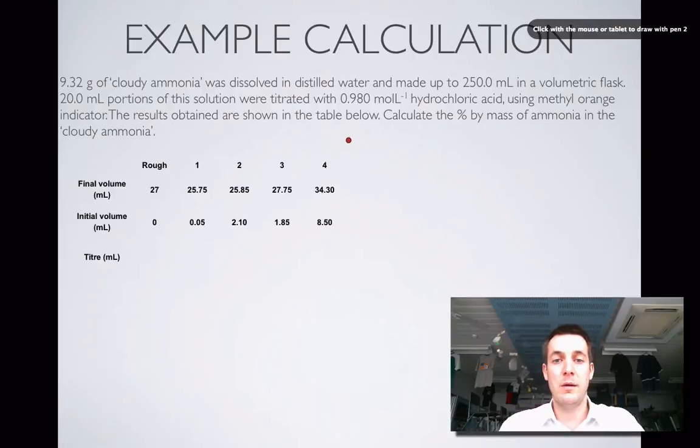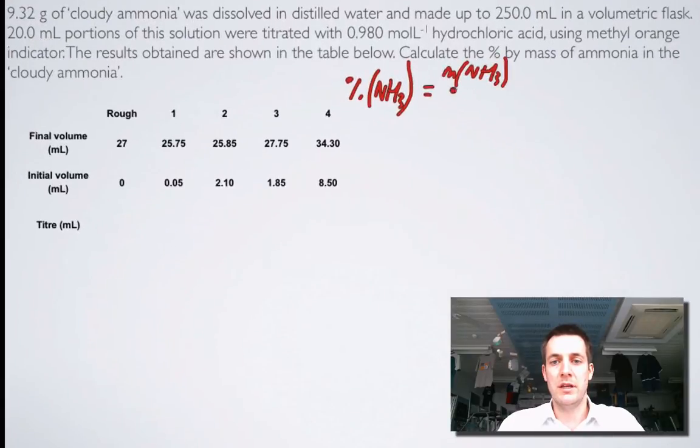Now a good habit to be in is always to write a formula for the thing you're being asked to find. So let's do that. It's the percentage of ammonia. Well, that equals the mass of ammonia divided by the mass of the impure substance, which is the mass of the cloudy ammonia, which is going to be 9.32 grams.